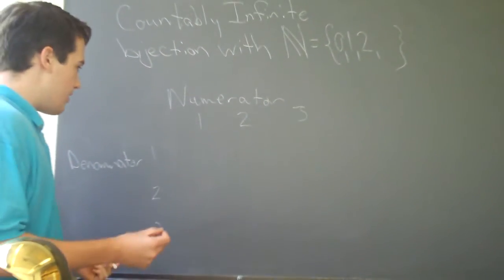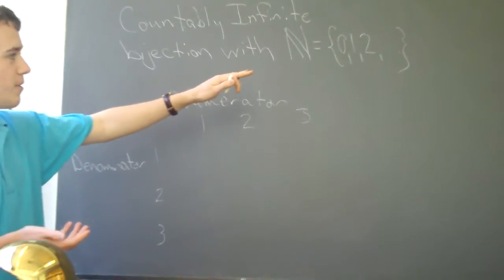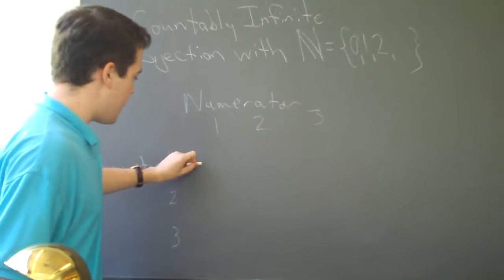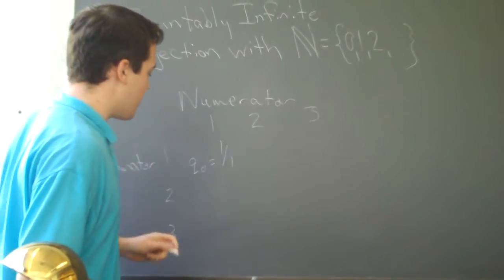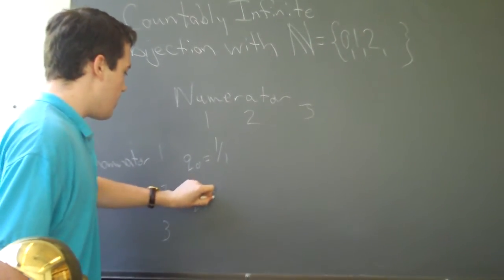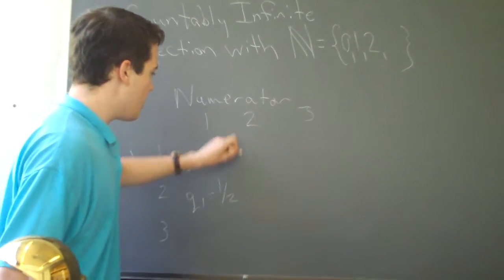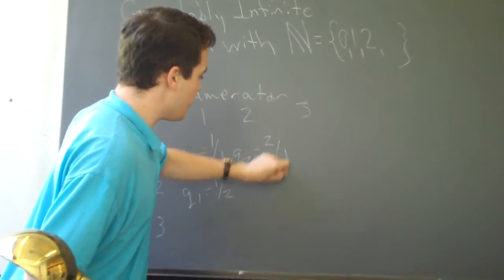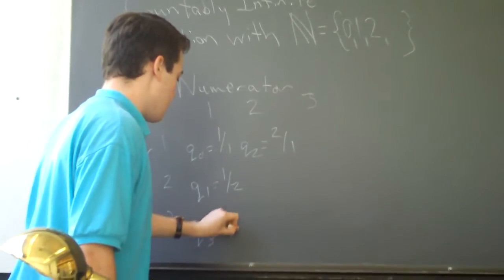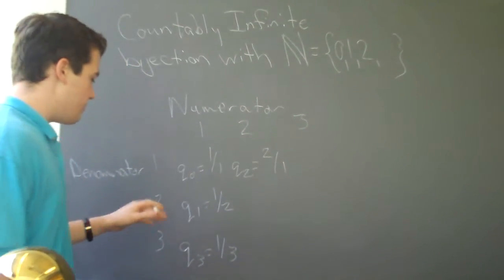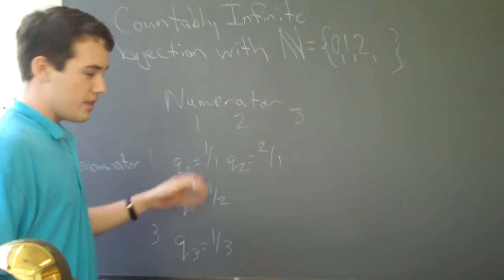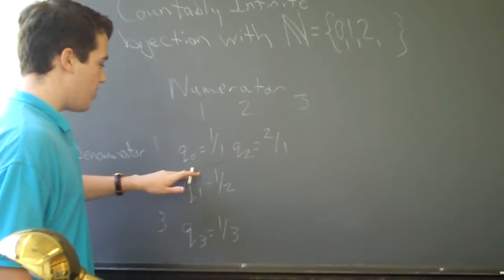And give them each a serial number, Q sub i from the set of the natural numbers, such as Q0 equals 1 over 1, and then begin counting diagonally, so that Q1 equals 1 over 2, Q2 equals 2 over 1, Q3 equals 1 over 3, and then Q4 would not be 2 over 2, because 2 over 2, when put in simplest form, is the same thing as Q0, 1 over 1.